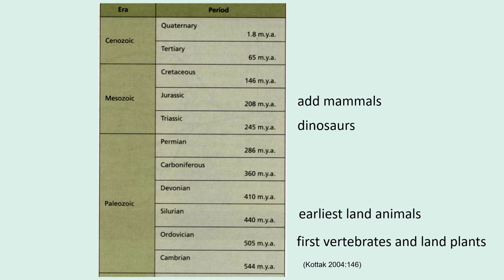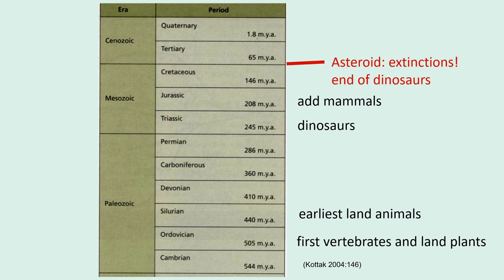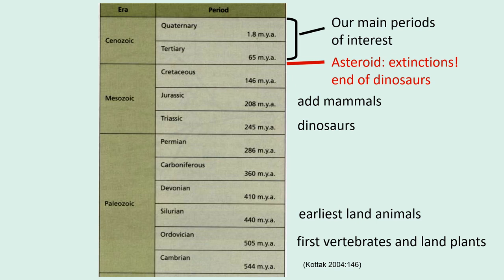To summarize, showing a stratigraphic column with the oldest at the bottom and the most recent at the top, we can see when the first vertebrates and land plants occur during the Ordovician, the earliest land animals during the Silurian period, dinosaurs in the Mesozoic, and when mammals were added in. At 65 million years ago, an asteroid struck, causing extinctions — this marked the end of the dinosaurs. Our main periods of interest in this course are only the last 65 million years.